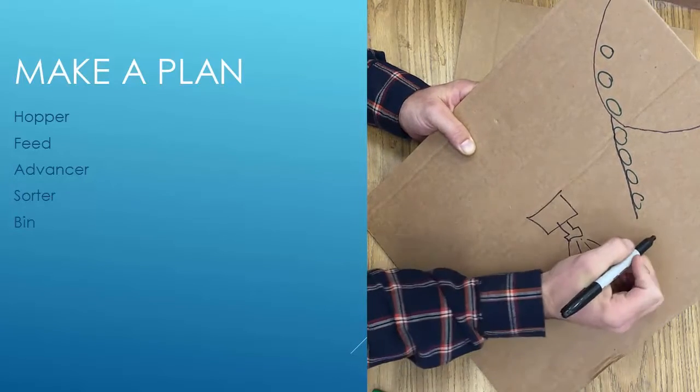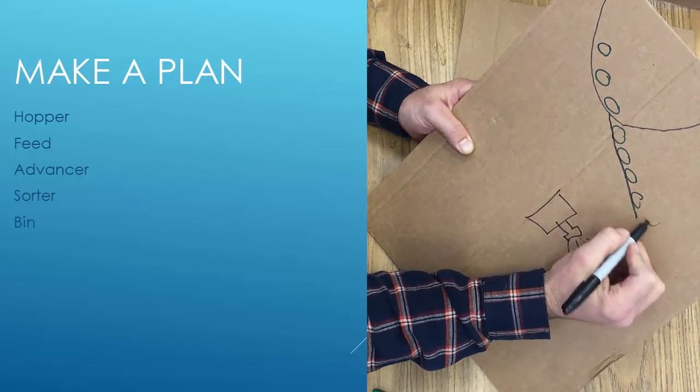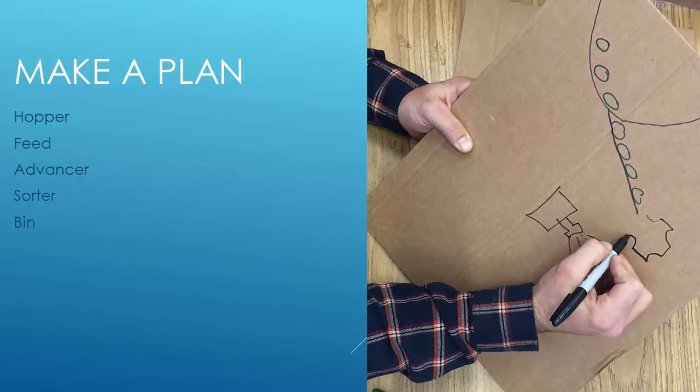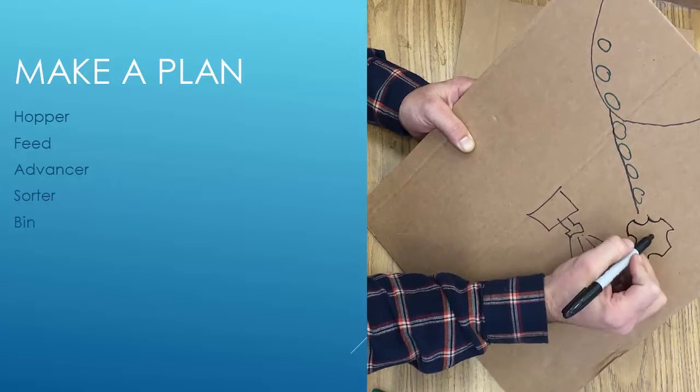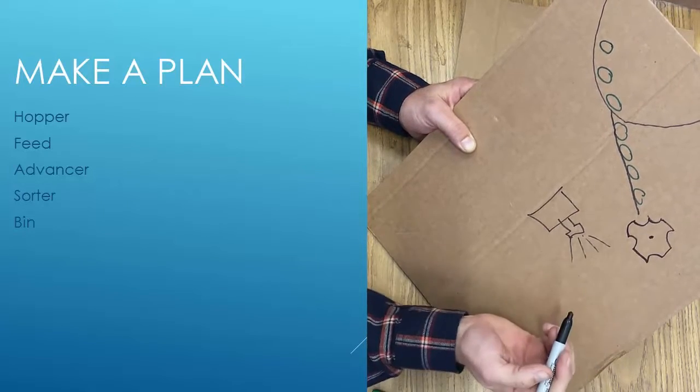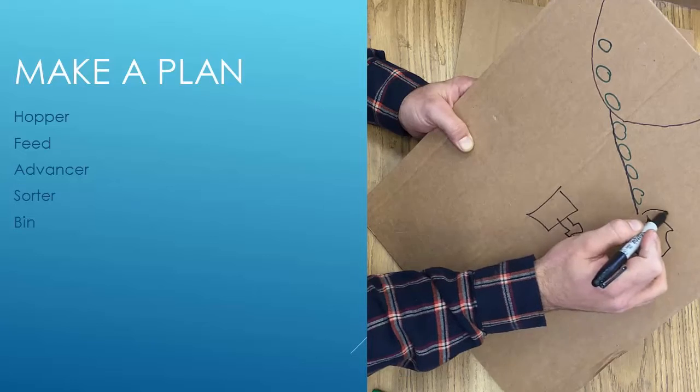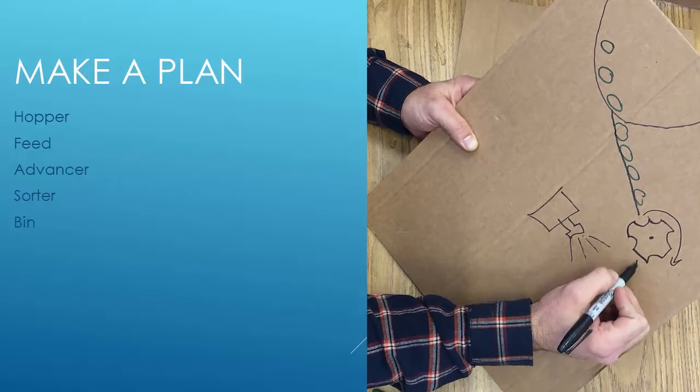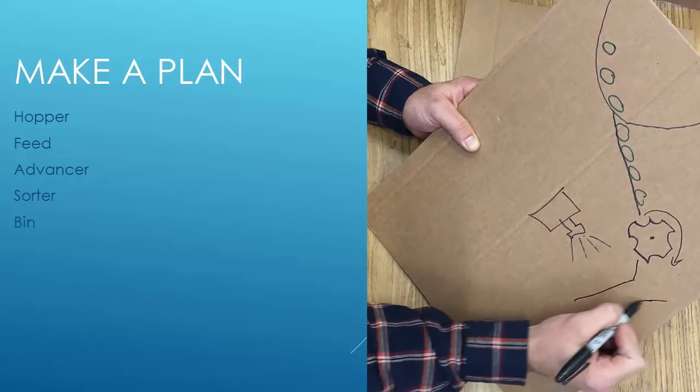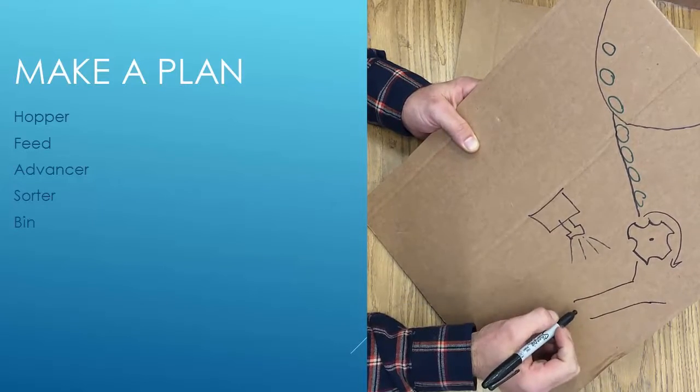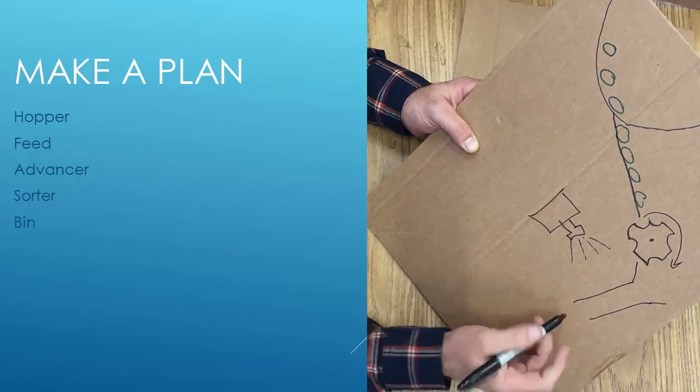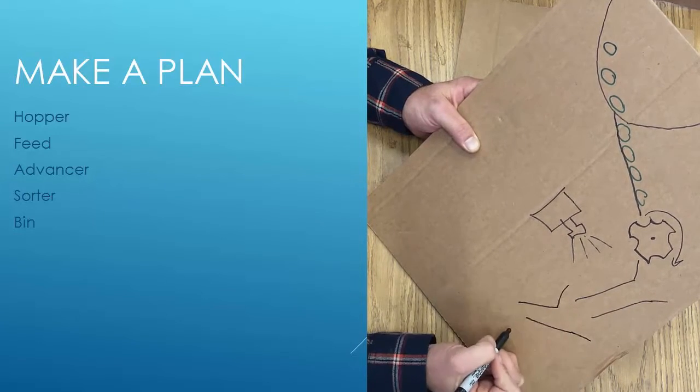It's going to then go one at a time into a device we're going to call our Advancer. A lot of times they look like a circle with notches cut out and it rotates around, ideally serving one at a time. That's a terrible drawing, but it gets the idea where we can kick this thing out. It's going to go just one at a time and dump the Skittle down into an area where the camera can see what color it is and then communicate that information to our servo motor behind the cardboard that then guides the Skittle into the appropriate bin.